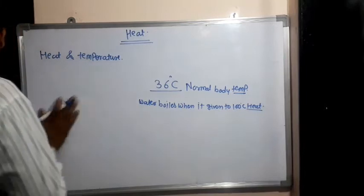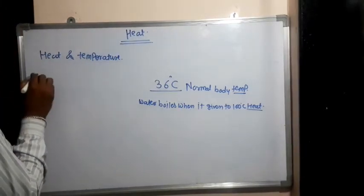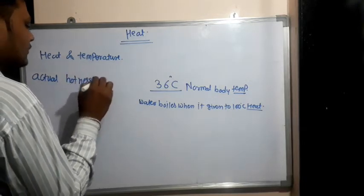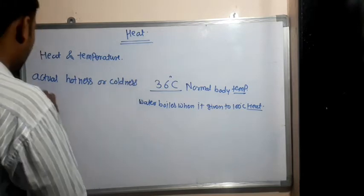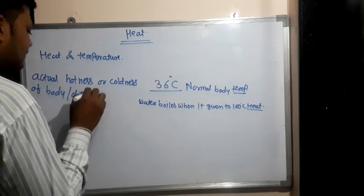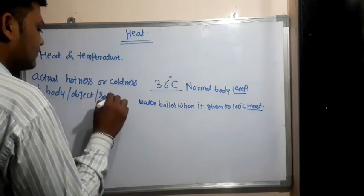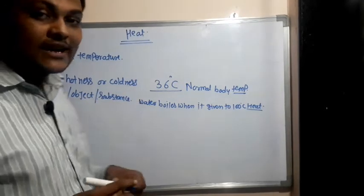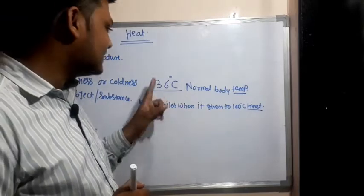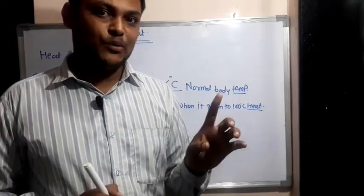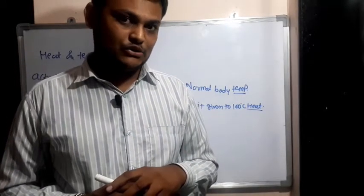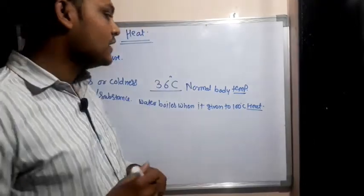Temperature is nothing but the actual hotness or coldness of a body, object, or substance. What is meant by temperature? The actual hotness of a body. The normal human body has 36 degrees Celsius — that is the actual temperature which is present in the human body.